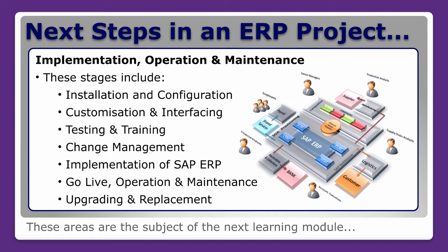Around that core there are people with roles managed through human capital management, which is the last module covered in the ERP lab. The stages of implementation, operation and maintenance are: installation and configuration, customization and interfacing, testing and training, change management, the implementation of SAP ERP — which we use because it's the market leader, though there are many other systems you could employ — go live, operation and maintenance, and then upgrading and replacement.